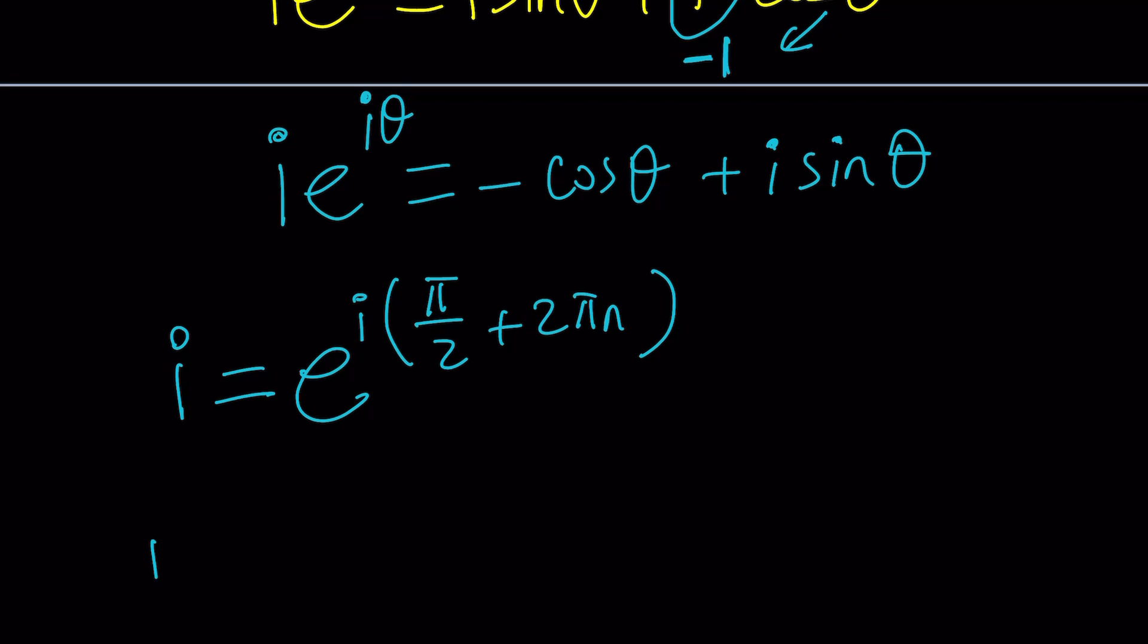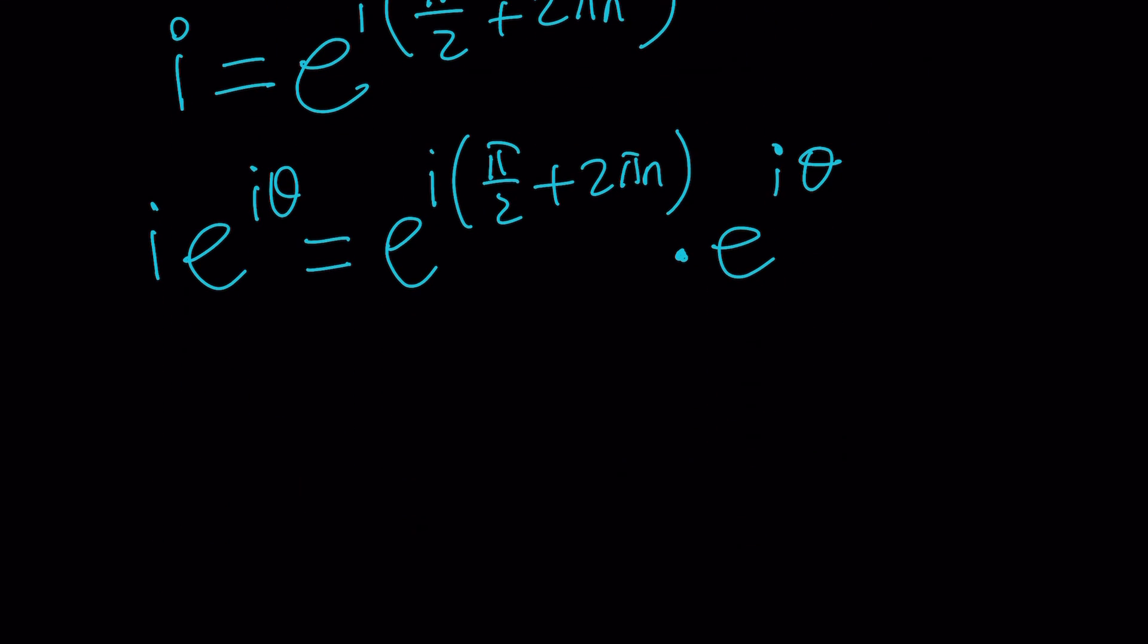So i e to the i theta becomes this, which is i, times e to the i theta. Now you have two exponentials that have the same base, Euler's number, thanks to Euler. He's done great things, in my opinion. He's the greatest mathematician.